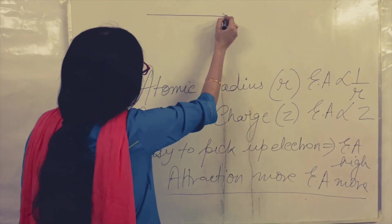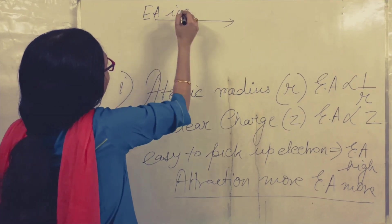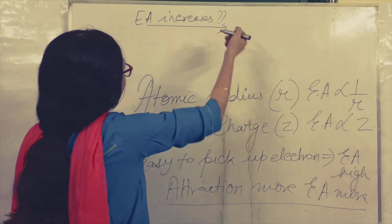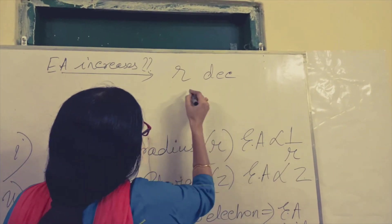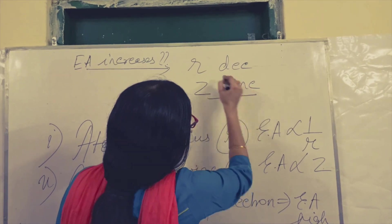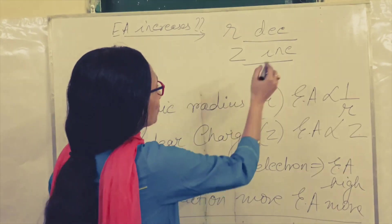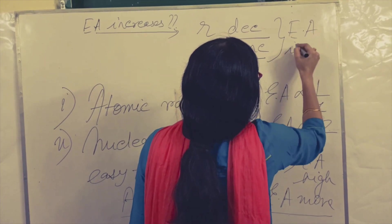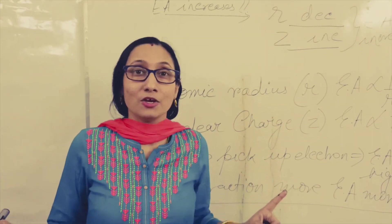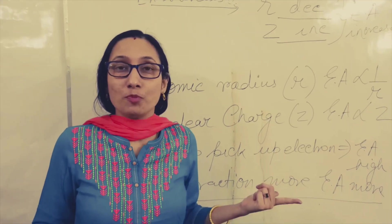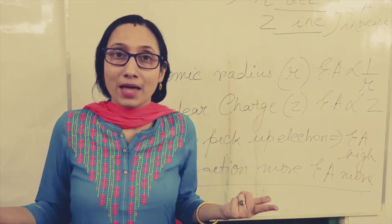Let us see why electron affinity increases across a period. Across a period, when you are traveling from left to right, R decreases and Z increases. Both these factors will favor the increase in electron affinity. So electron affinity will increase. But remember, this will take place till group 17. Group 18 will have zero electron affinity because group 18 has a stable electronic configuration and will be reluctant to pick up an additional electron.